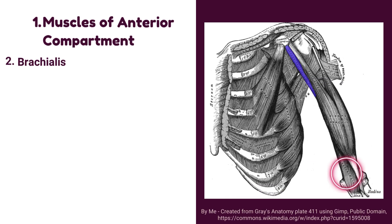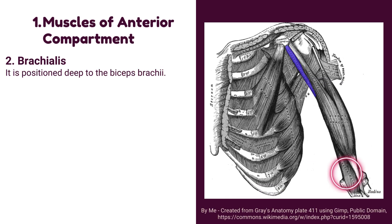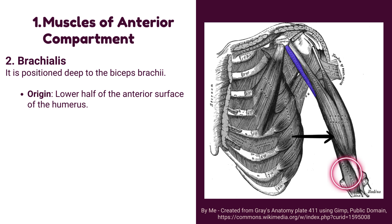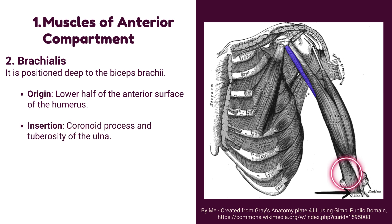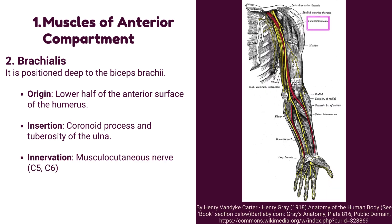Number 2: brachialis muscle. It is positioned deep to the biceps brachii. Origin: it originates from the lower half of the anterior surface of the humerus. Insertion: it is inserted into the coronoid process and tuberosity of the ulna. Innervation: it is innervated by the musculocutaneous nerve and radial nerve.